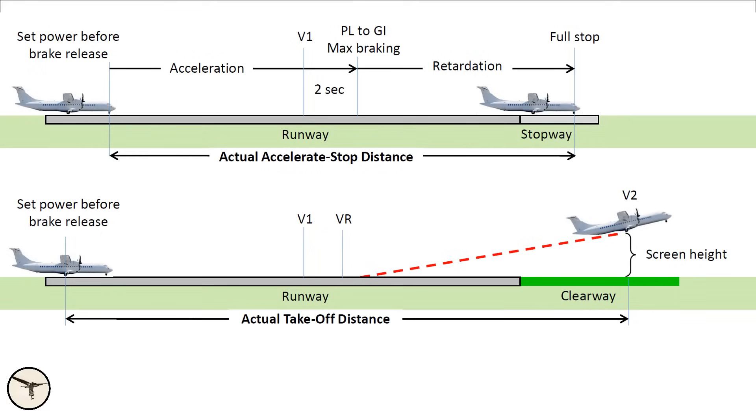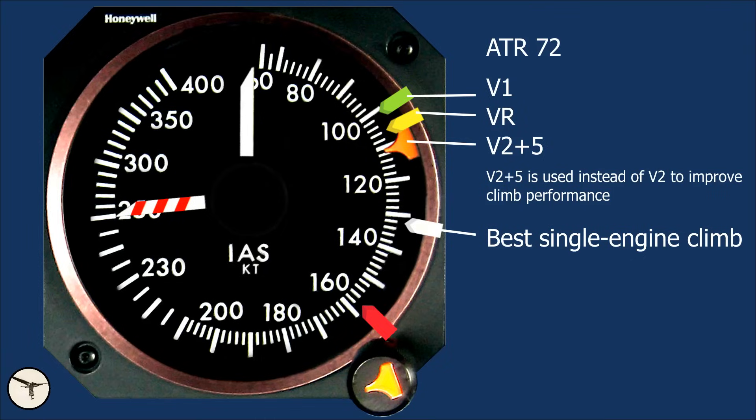One key requirement is that if an engine fails at the most critical moment during take-off, the aircraft must either be able to stop safely within an accelerate-stop distance, or continue the take-off and achieve a safe climb-out. Here is an important point to remember: the best speed for single-engine climb is higher than the speed used for take-off. The take-off reference speeds are V1, take-off decision speed; VR, rotation speed; and V2, take-off safety speed.